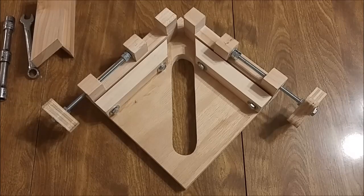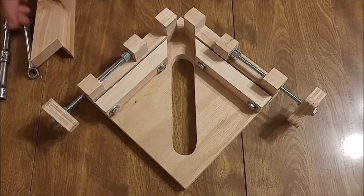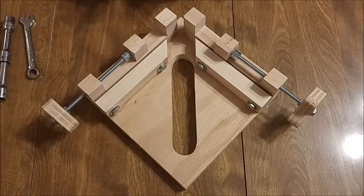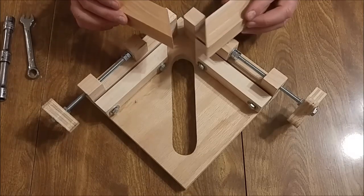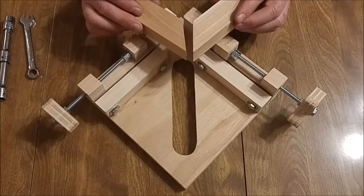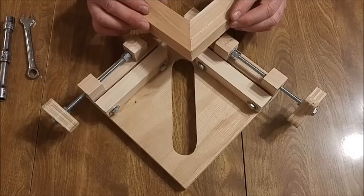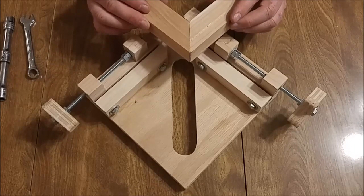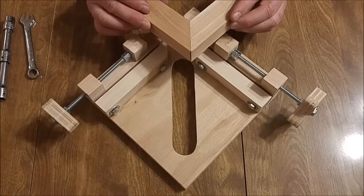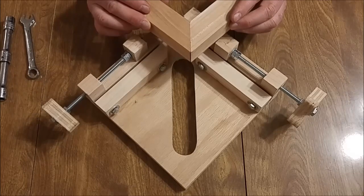So this is a corner clamp project, sometimes called a frame clamp. The idea is to be able to join two pieces together that have a 45-degree miter cut, half lap joint, or any other kind of 45-degree angle joint. You join those together and hold them in place so you can either glue or add fasteners to secure those two pieces together.